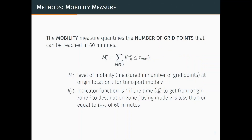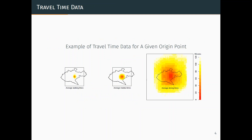With all this travel time data, how do we actually quantify accessibility? We use three different measures. The first is what we're calling the mobility measure, and this is pretty simple — it just counts the number of other grid points that can be reached in 60 minutes from the origin grid point. When we create the travel time data, we do it at the morning peak, 7 to 9 a.m.